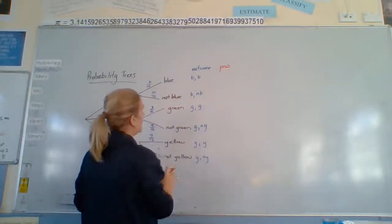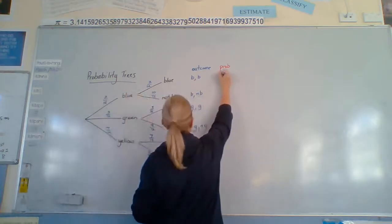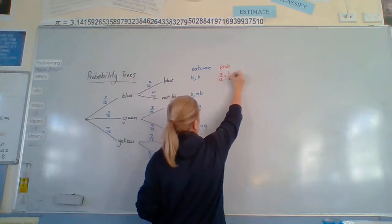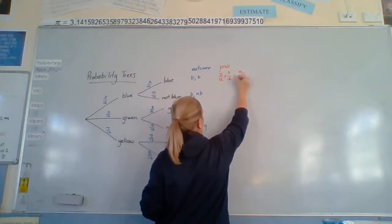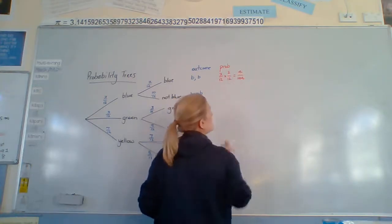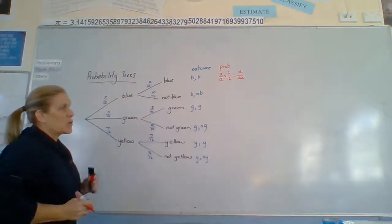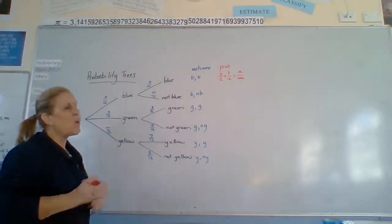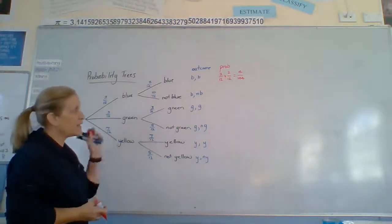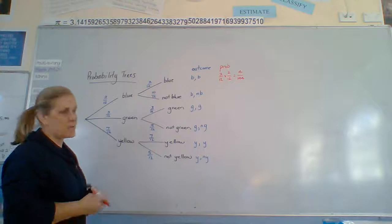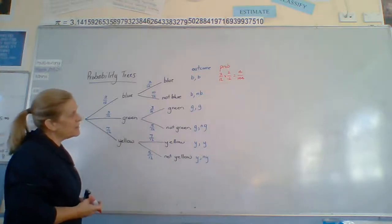When we multiply our probabilities, we multiply across. So, 2 twelfths times 2 twelfths equals 4 over 144. So, being that there were 12 marbles in the bag, there are four opportunities of me to take two blues out if I had all the opportunities.